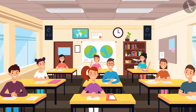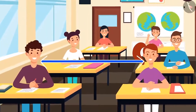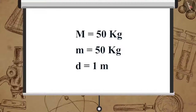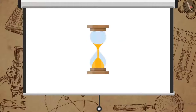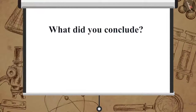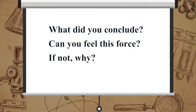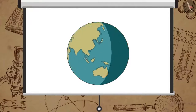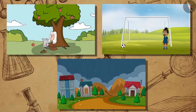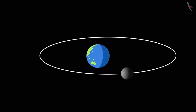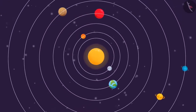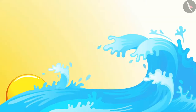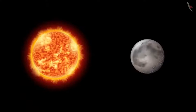After knowing about the universal law of gravitation, can you calculate the force between you and your friend sitting nearby? Assume both of you have a mass of 50 kilograms each and the distance between you is 1 meter. Newton's universal law of gravitation explained some very important occurrences on earth — it proved the existence of a force that binds us to the earth, how the moon moves around the earth, how planets revolve around the sun, and explains the phenomenon of tides due to the gravitational pull of the moon and the sun.